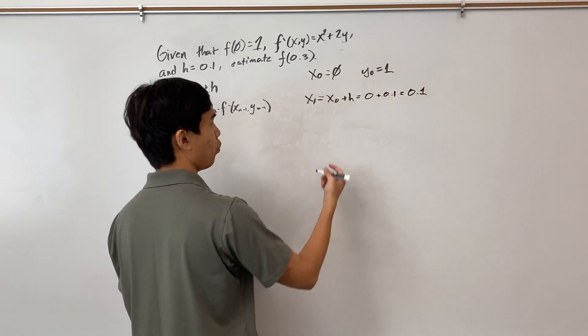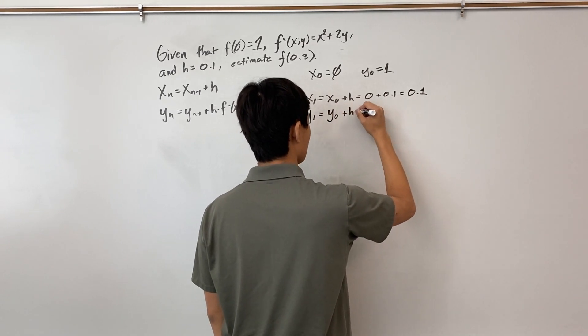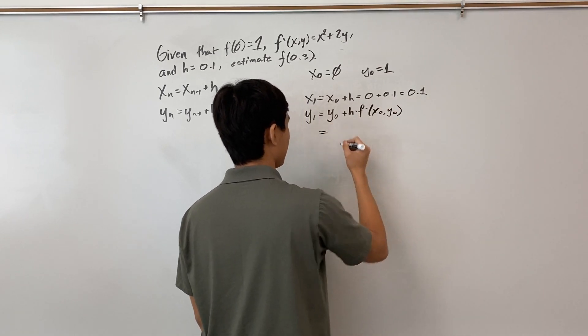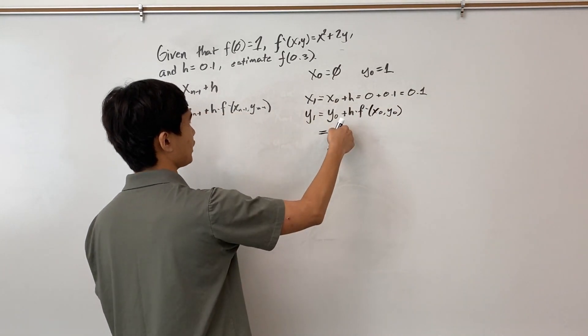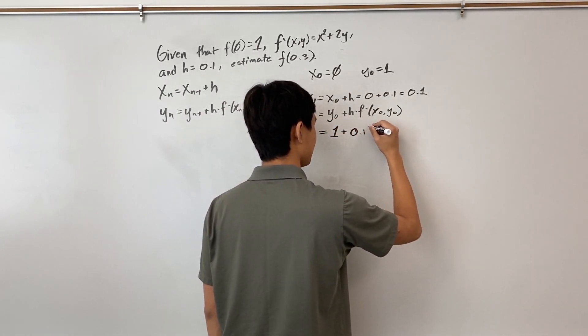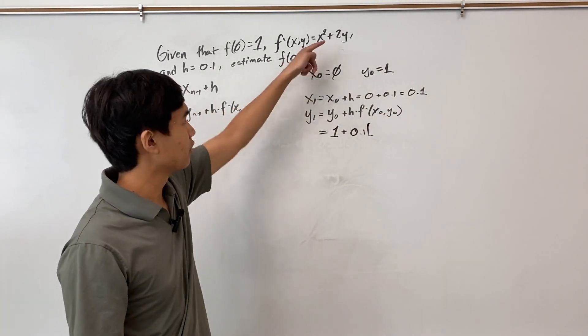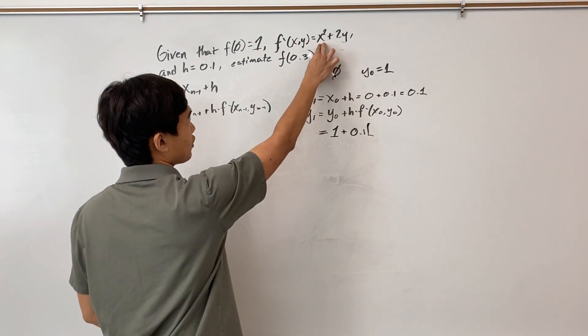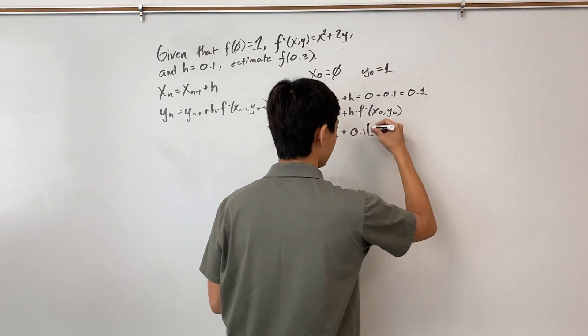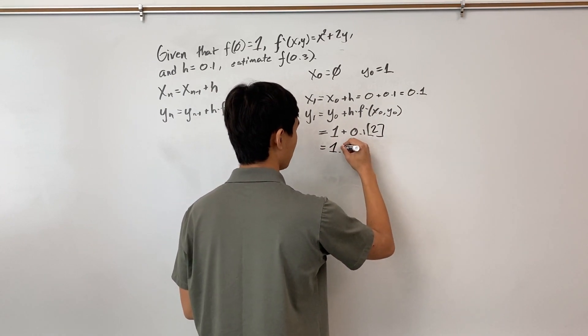Now to find y₁, this is y₀ + h·f'(x₀, y₀). And this is equal to, so y₀ is 1, plus our step size times the derivative at (0,1). So if x is 0, this goes away. If y is 1, this is 2. So our derivative is 2. And adding these together, we have y₁ = 1.2.